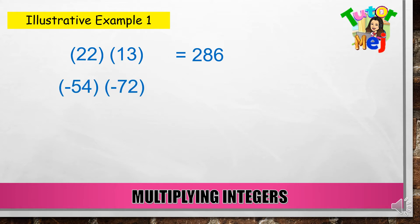Result: positive 286. Next example — negative 54 and negative 72. Negative times negative is equal to positive. Then 54 times 72 equals positive 3,888.